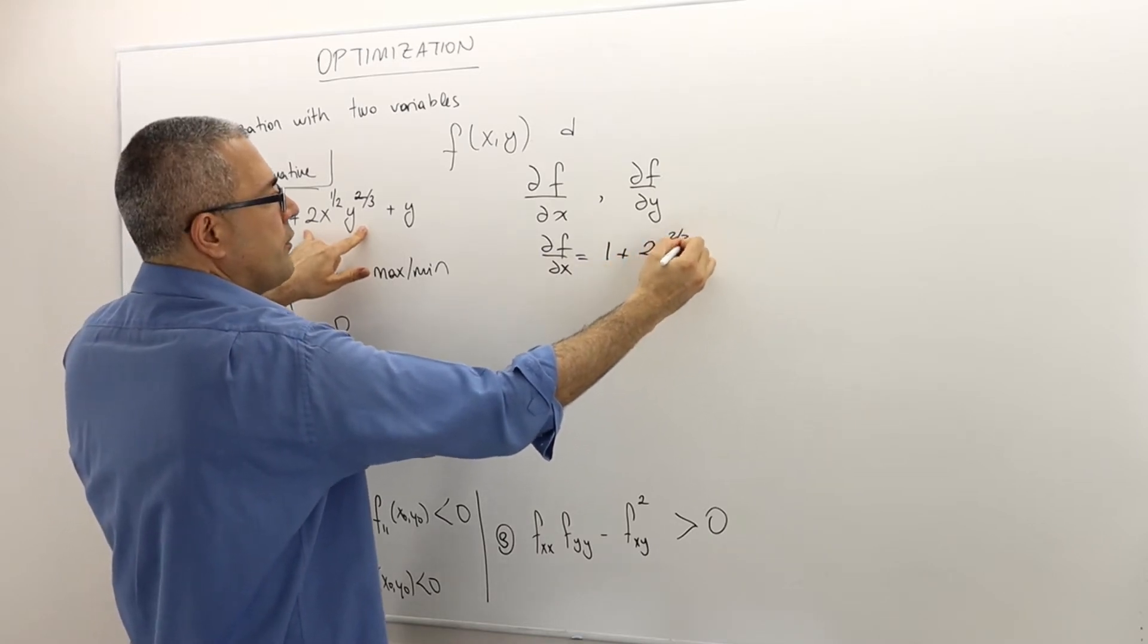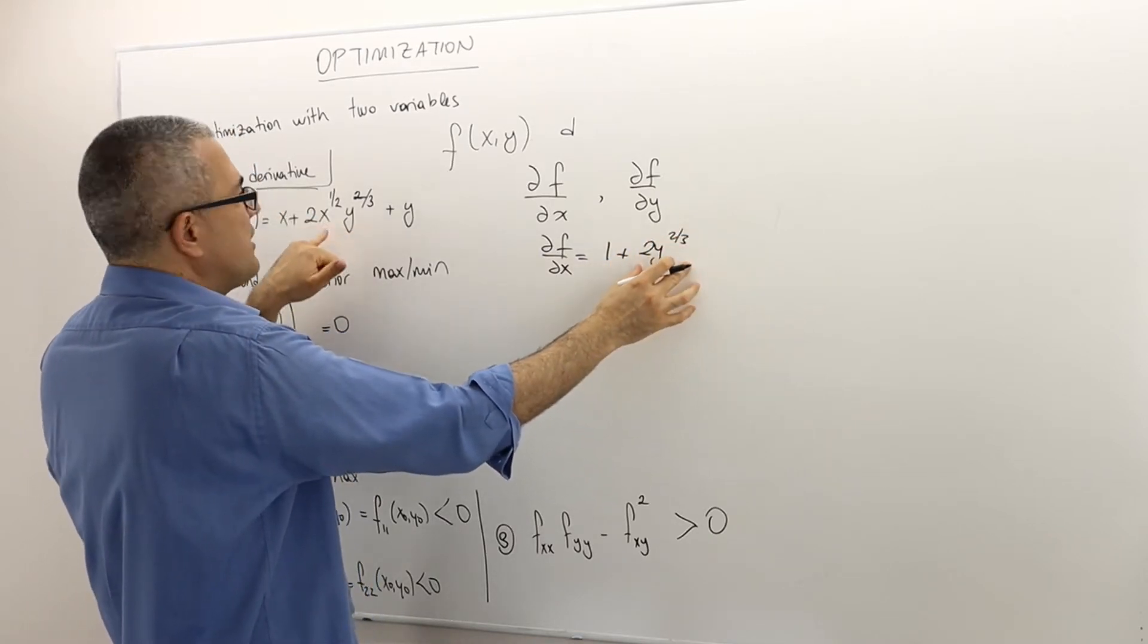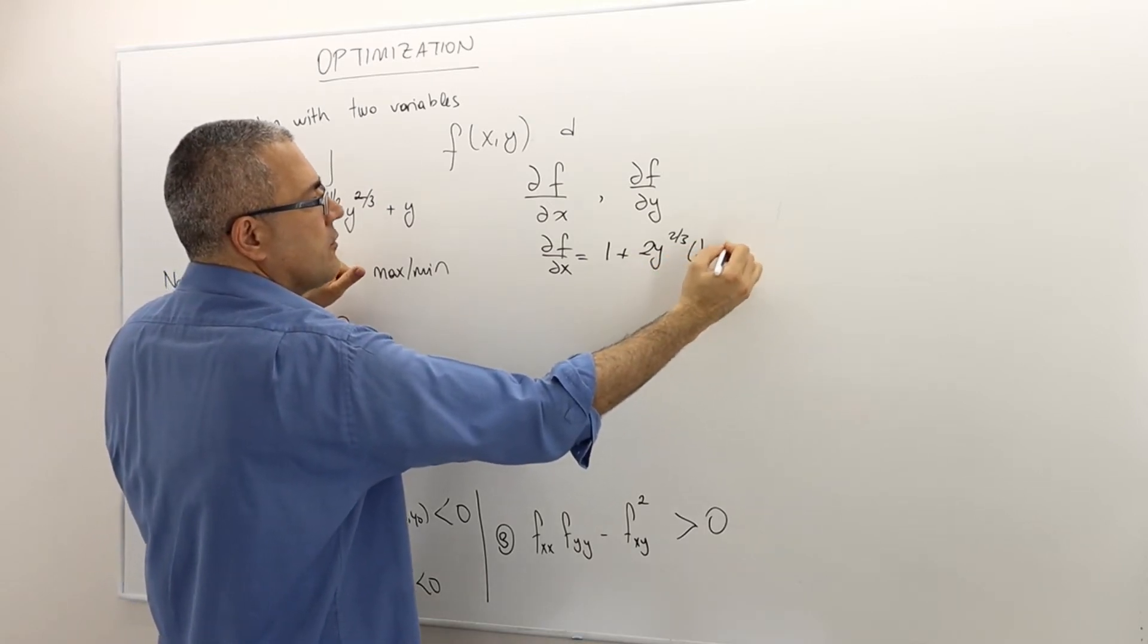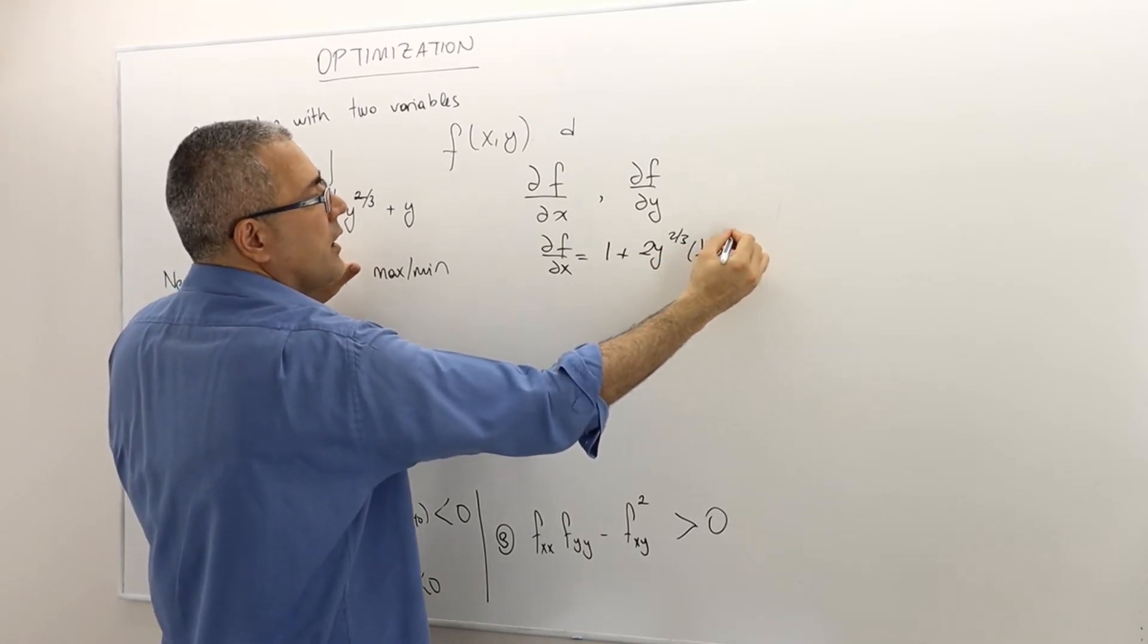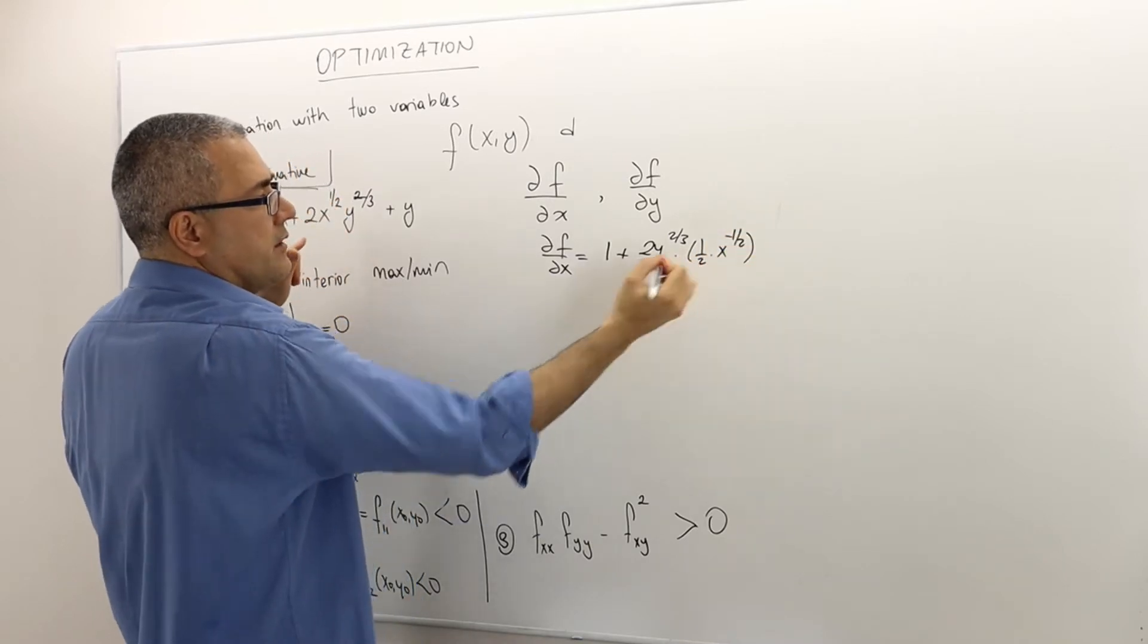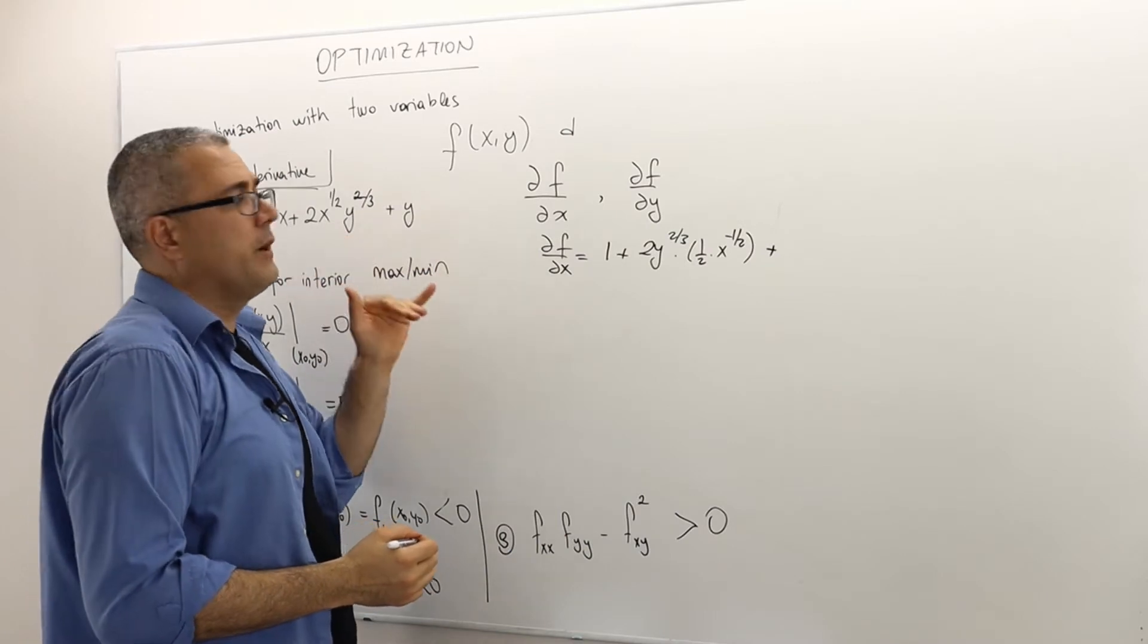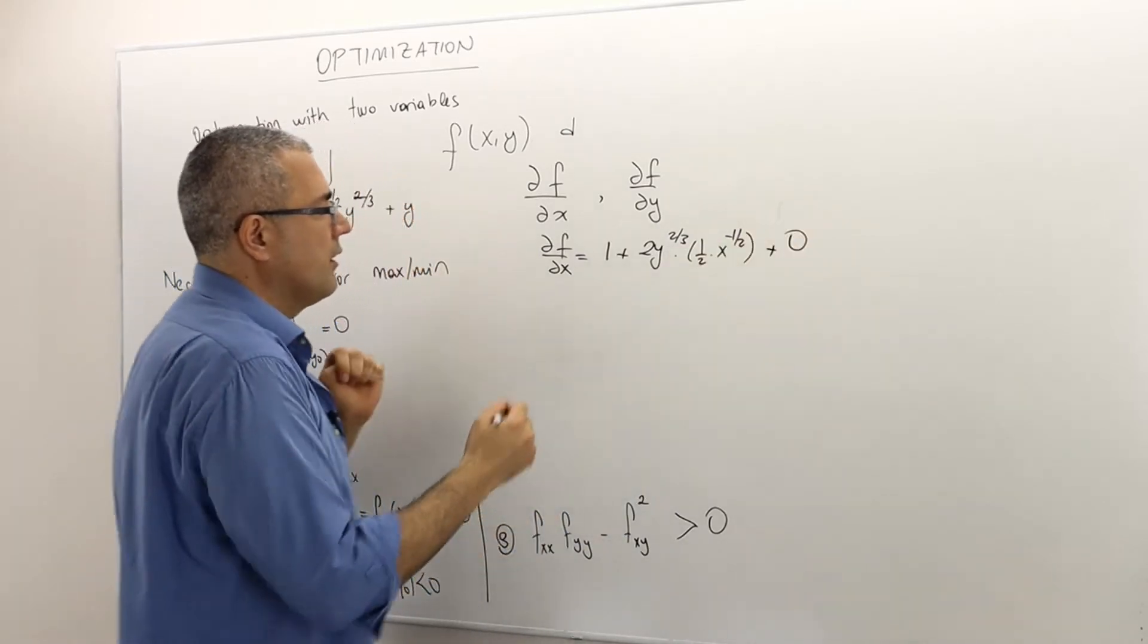So it's 1 plus the derivative of this, the 2y to the power 2 third is constant. So it's just x to the power 1 half. That means 1 half times x to the power 1 half minus 1, which is minus 1 half. So everything is multiplication here. Plus the derivative of y with respect to x is just 0.